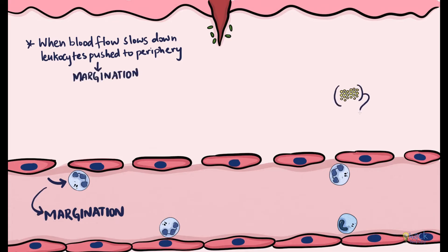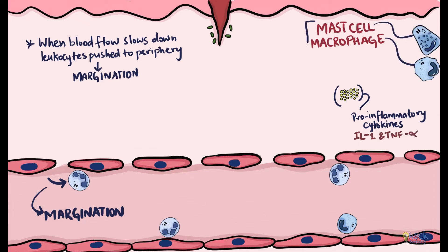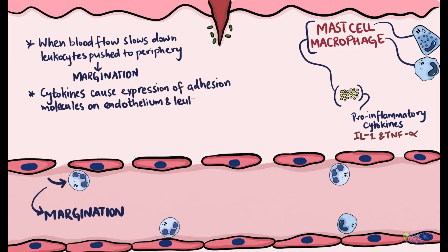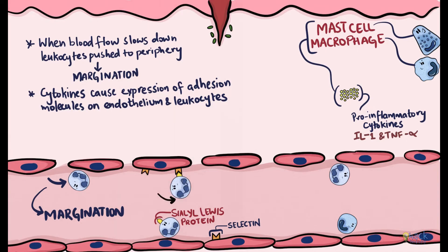Pro-inflammatory cytokines like interleukin-1 and tumor necrosis factor alpha released by macrophages and mast cells cause endothelial cells and leukocytes to express adhesion molecules. Adhesion molecules on the endothelium are called selectins, and those expressed on leukocytes are called sialyl Lewis proteins. These sialyl Lewis proteins bind with selectins causing leukocytes to slow down and tumble along the endothelium, a process called rolling.